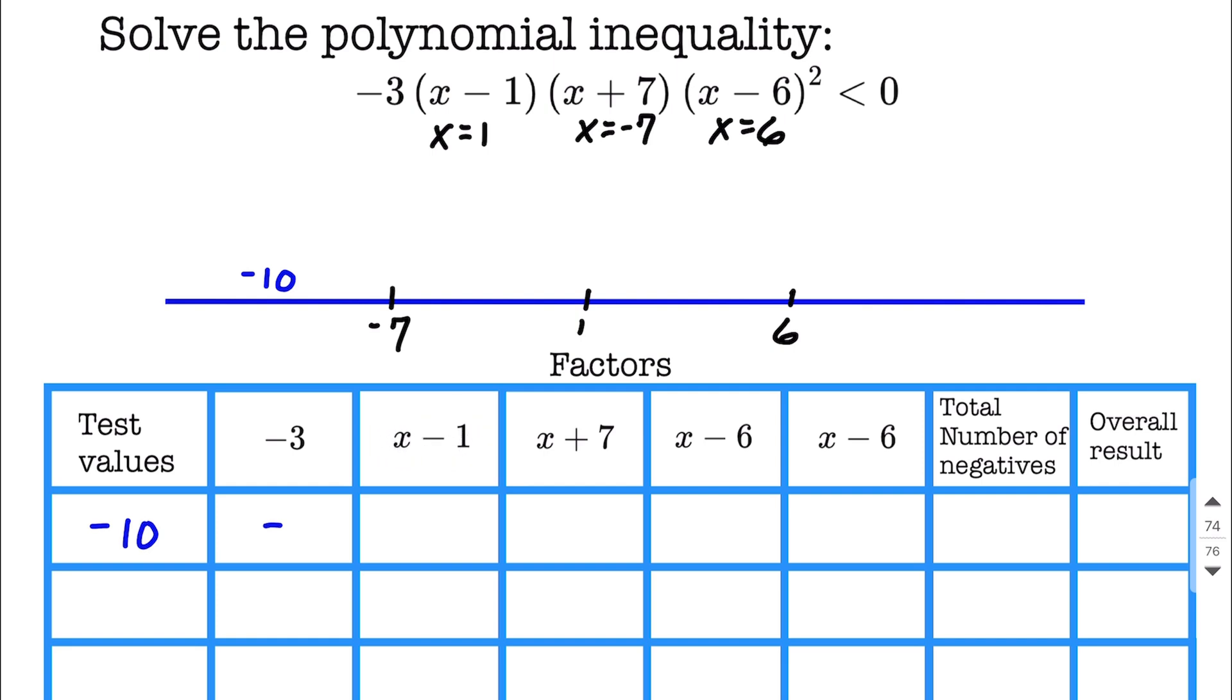But what happens if we plug in negative 10 into each of these other factors? We have negative 10 minus 1 makes negative 11. We don't really care about the number that comes out so much, just positive or negative. Next, negative 10 plus 7 makes negative 3. Well, that's another negative. Negative 10 minus 6, negative 16, but another negative, and the same thing because it's a repeat factor.